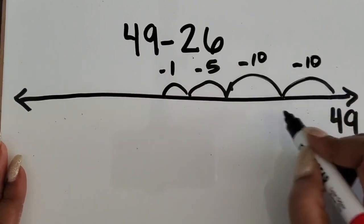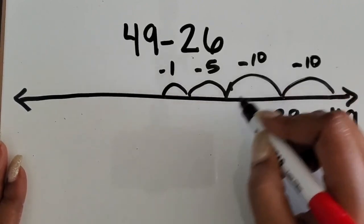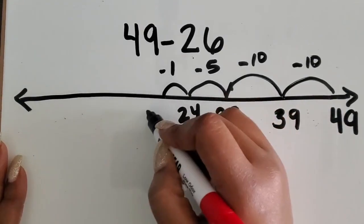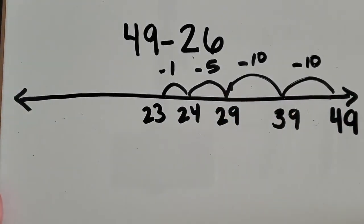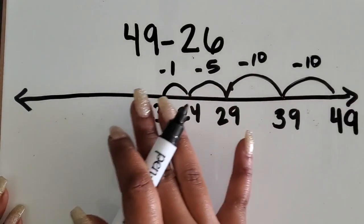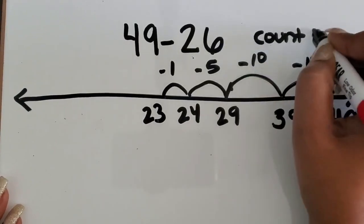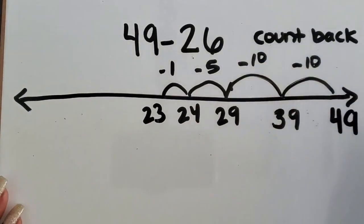49 minus 10 is 39. Minus 10, 29. Minus 5, 24. Minus 1 is 23. We just use the number line to count back in order to subtract.